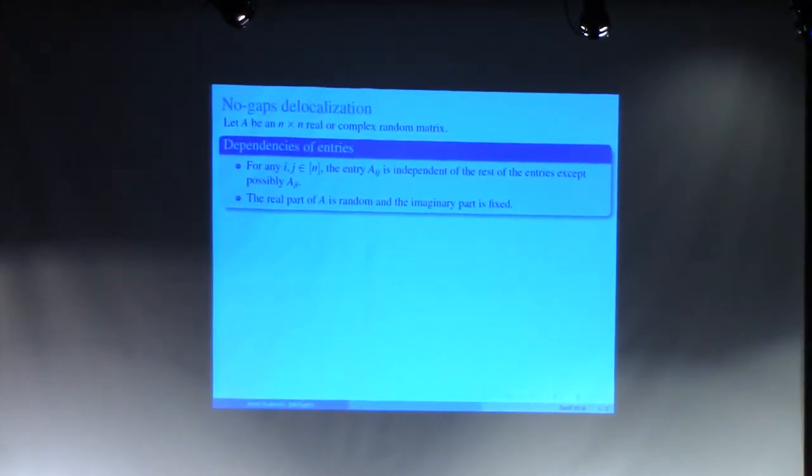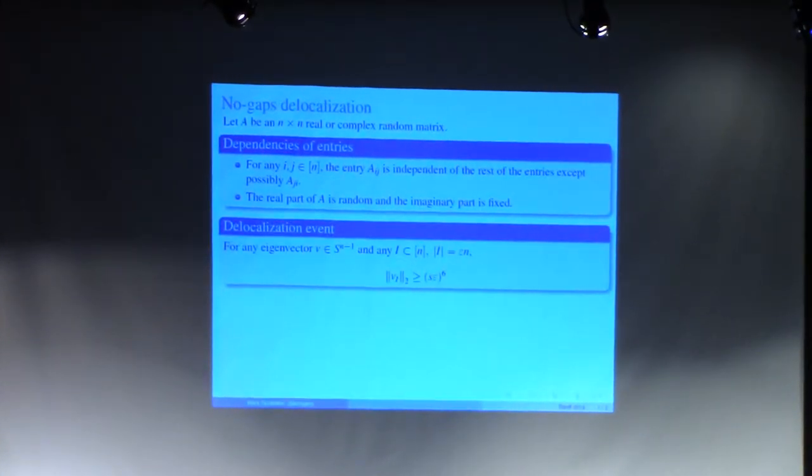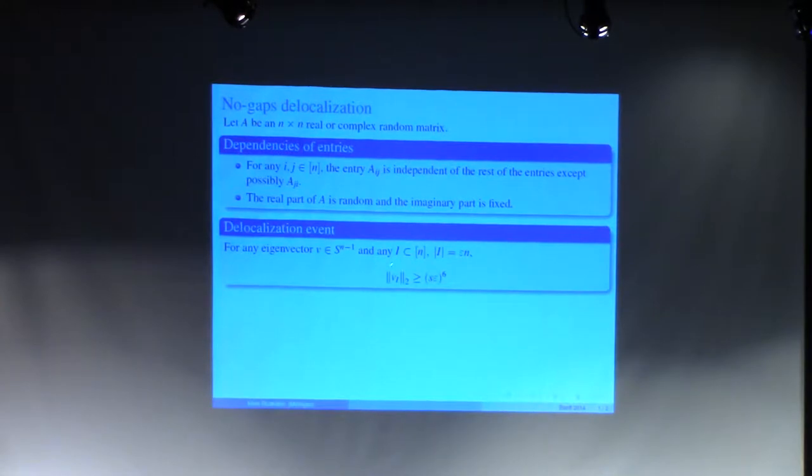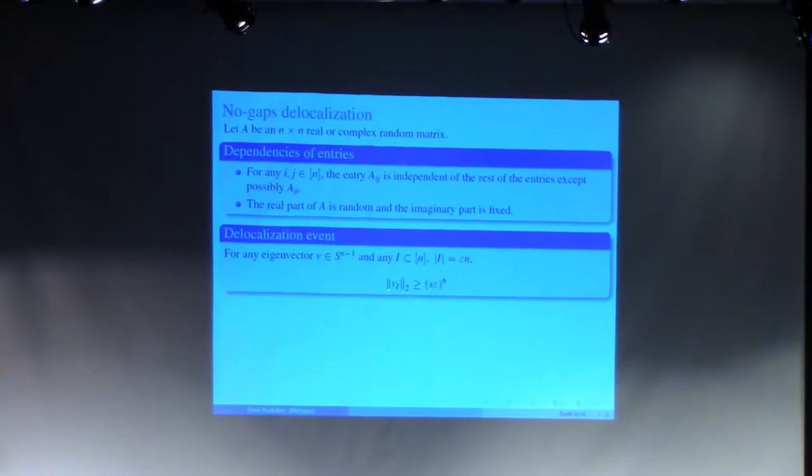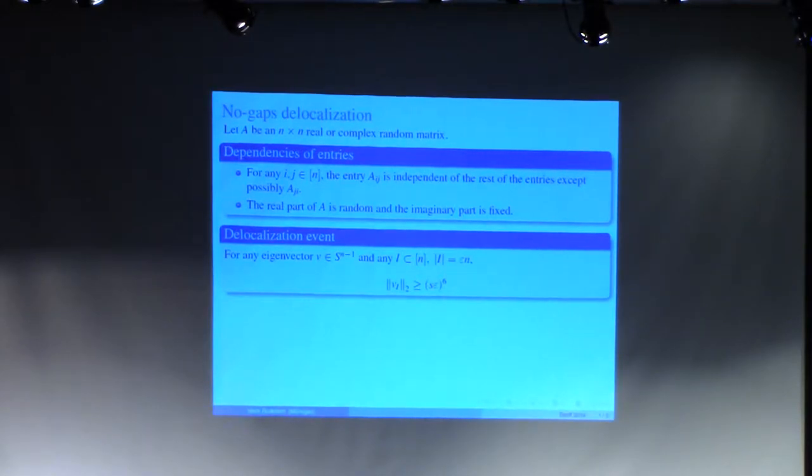We want to prove that any unit eigenvector of a matrix carries a non-negligible mass on any reasonably large set. If you take epsilon to be small and take any subset of coordinates, then these coordinates carry a mass which is polynomial in epsilon.